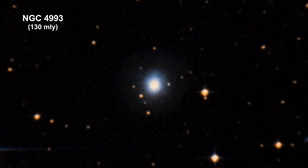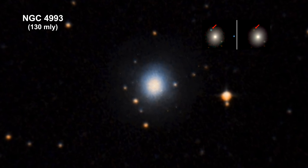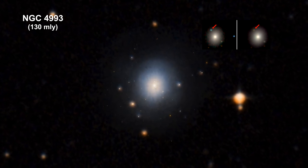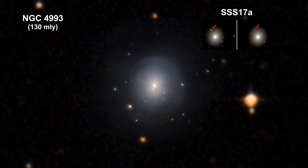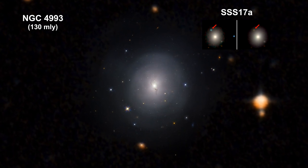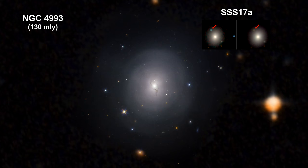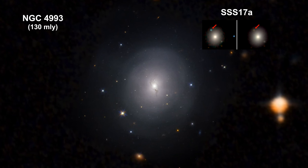Within hours, ground-based telescopes observed optical and near-infrared images of a bright light and named it SSS-17A. Redshift data indicated that it was indeed coming from NGC 4993.